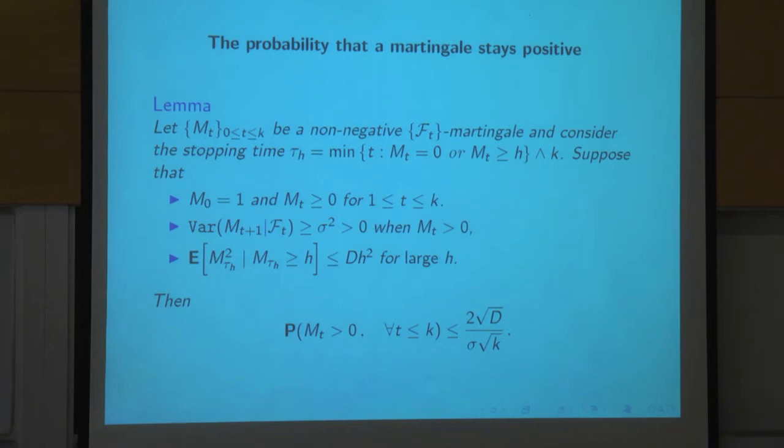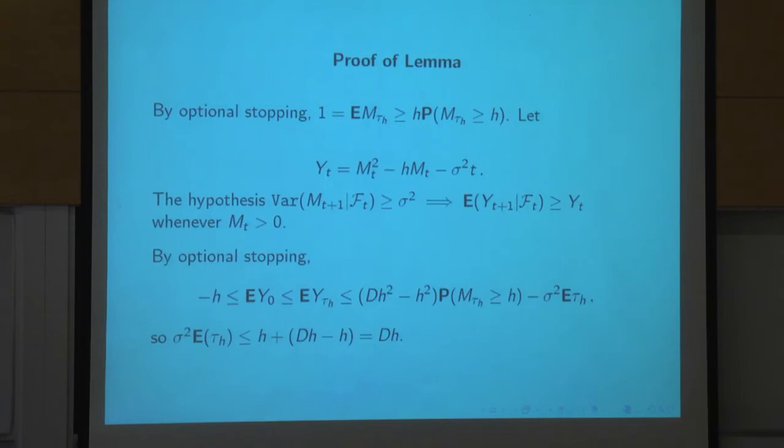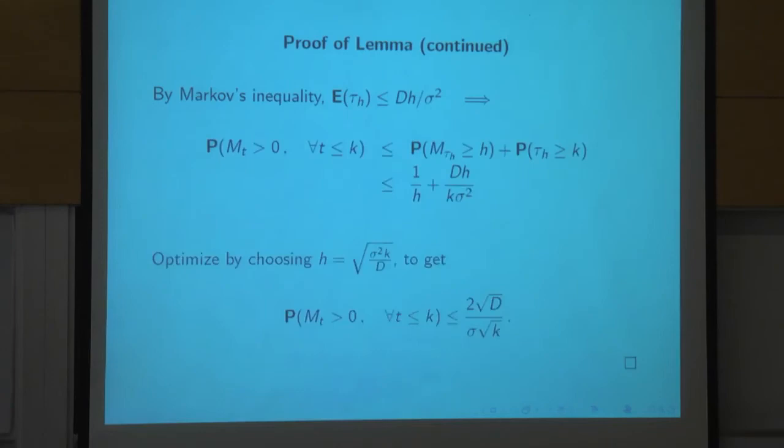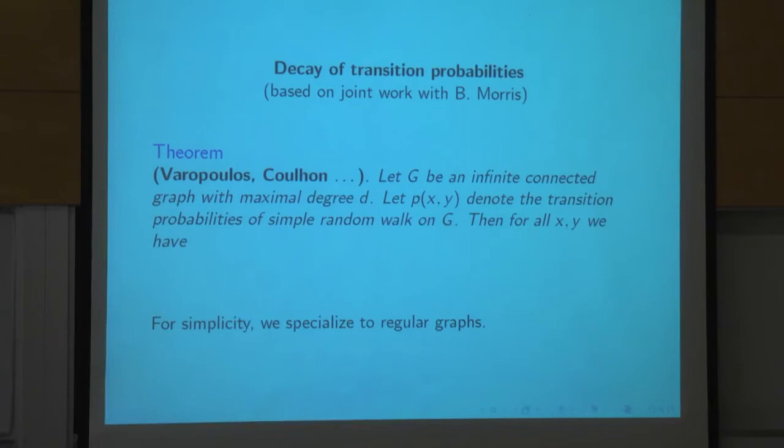This is very standard for simple random walk, and it's true for any martingale under these conditions. The proof is a standard argument with optional stopping — it takes about two pages. Let me show how it's used to bound transition probabilities.